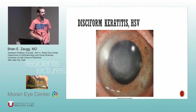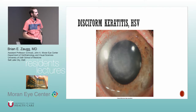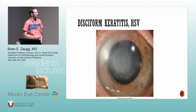This image shows a round, central hazy spot with patchy haze coming off the limbus and not much vascular tissue coming in. This is pretty classic for discoform keratitis, which you see in simplex as well.